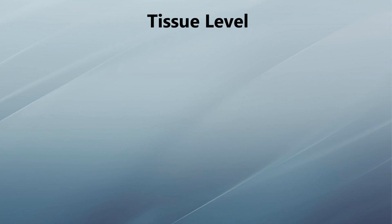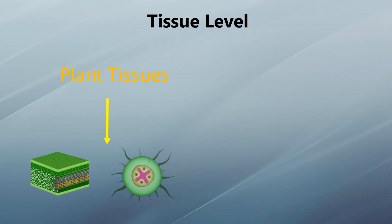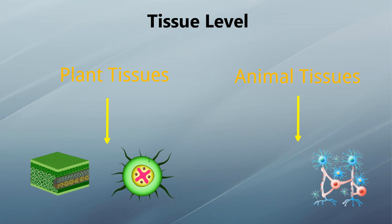There are different types of plant tissues, such as epidermal tissue and ground tissue. Animal tissues are also of different types, for example nervous tissue and muscular tissue.